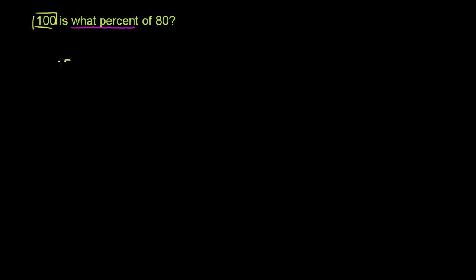We start, we have 80. If we multiply it by something, let's call this something x. If we multiply 80 by something, we're going to get 100. And we need to figure out what we need to multiply 80 by to get 100.